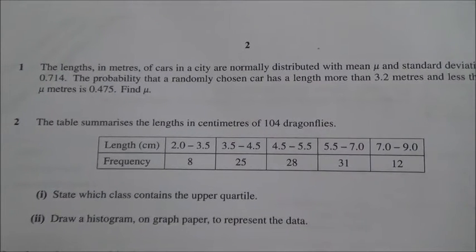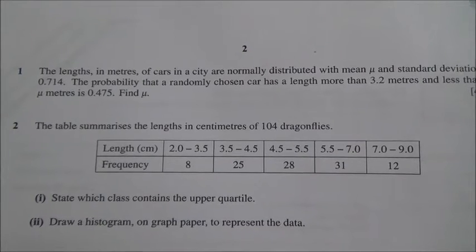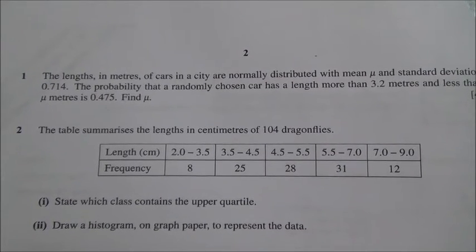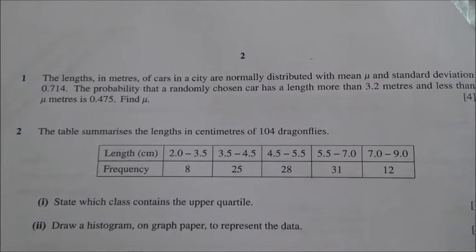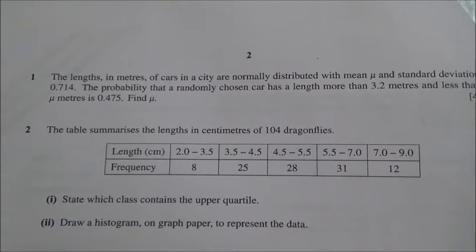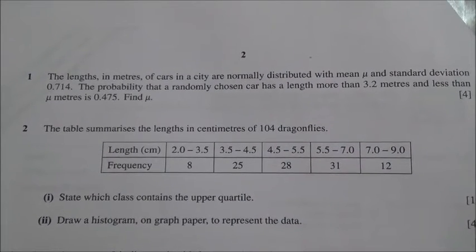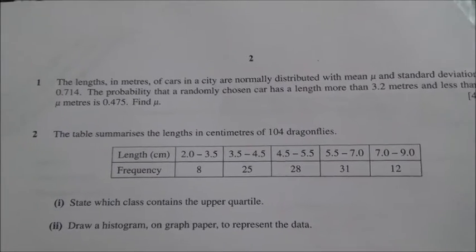Hi, this is question number 2 taken from June 2015 Advanced Level Maths, Probability and Statistics. The table summarizes the lengths in centimeters of 104 dragonflies, stating which class contains the upper quartile. And also we need to draw a histogram on graph paper to represent the data.